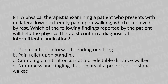A physical therapist is examining a patient who presents with unilateral lower extremity pain upon walking, which is relieved by rest. Which of the following findings reported by the patient will help the physical therapist confirm a diagnosis of intermittent claudication? Option A: pain relief upon forward bending or sitting. Option B: pain relief upon standing. Option C: cramping pain that occurs at a predictable distance walked. Option D: numbness and tingling that occurs at a predictable distance walked.